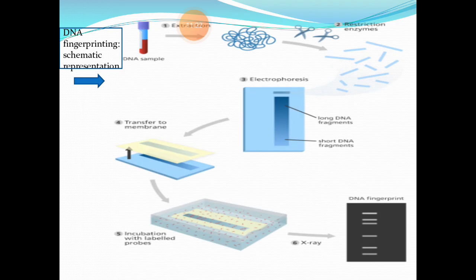This slide gives the schematic representation of DNA fingerprinting. The major steps are: first, you need a DNA sample; then you isolate and elute the DNA from the sample — that is the first step. This DNA is then subjected to the action of restriction endonucleases or restriction enzymes.